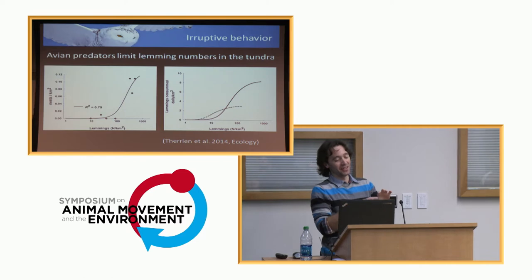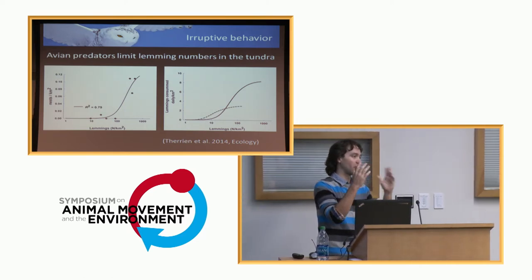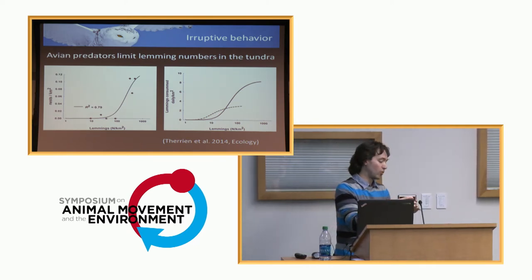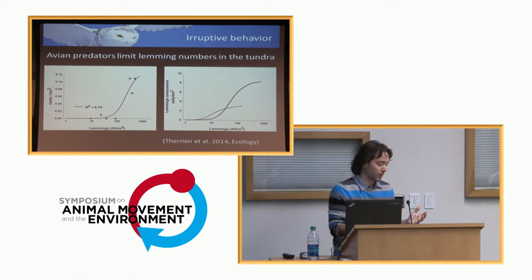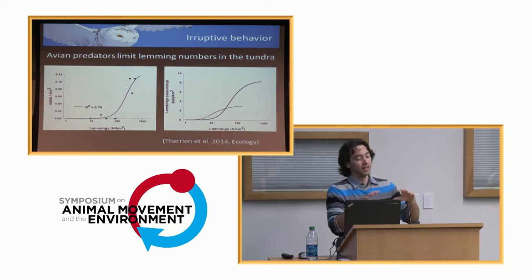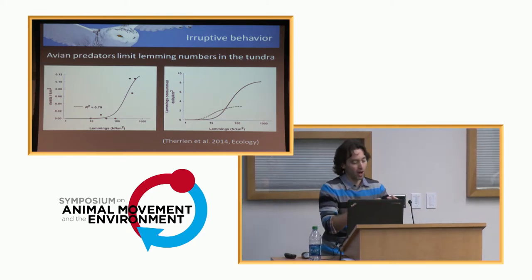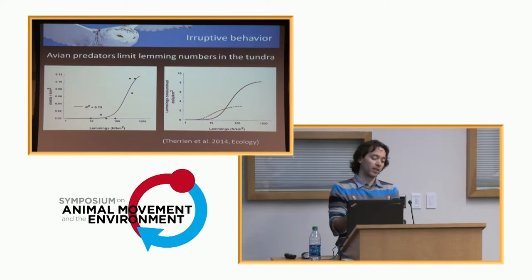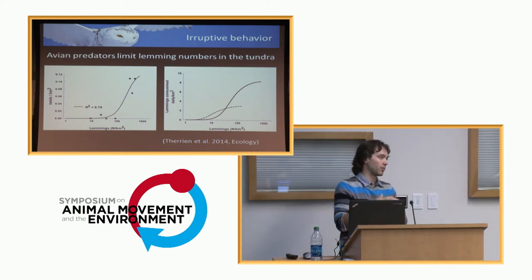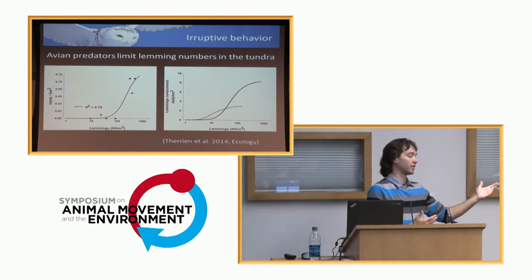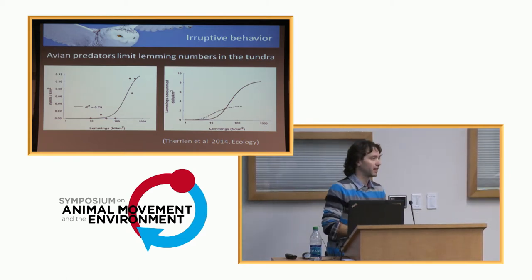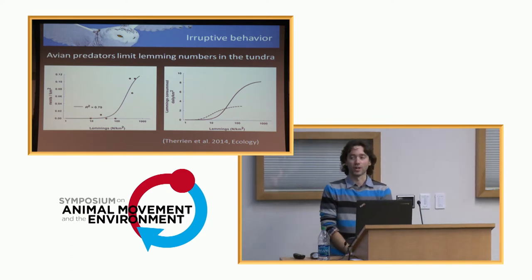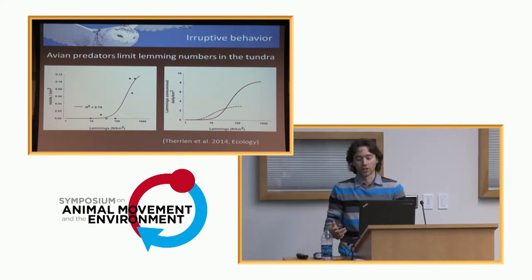The question was whether lemming populations are synchronized across the tundra. The answer is no — there's some synchronization within a given radius. Scientists agree on about 400-500 kilometers, maybe up to 1,000 kilometers: if you have a peak in abundance, it's pretty much high in that region. As you move away from that site, you lose that synchronicity. One year you might have high abundance in Eastern Canada while at the same time having low abundance over the rest of Canada, the Arctic, Russia, Finland, or Norway.